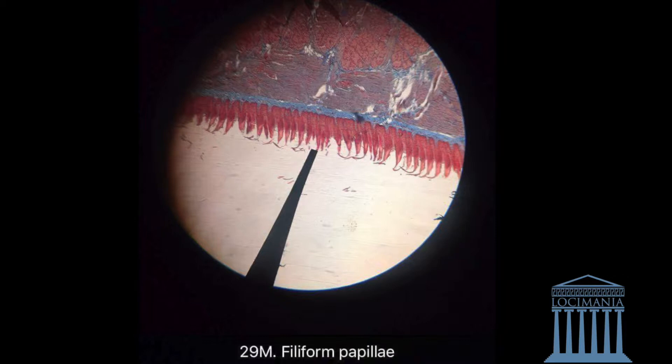Here we have the filiform papillae on the outermost side of the specimen. These are the filiform papillae — as you can see here, they look like some brushes.